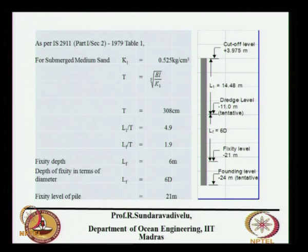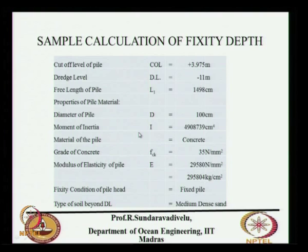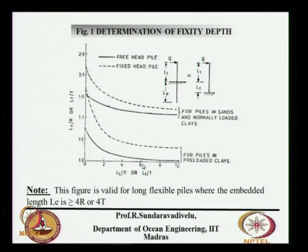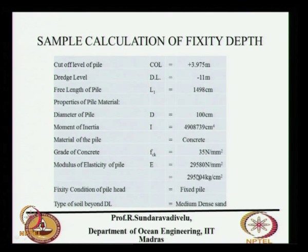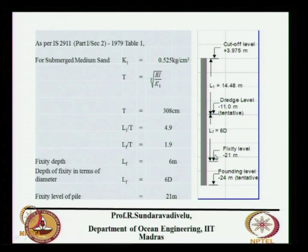For L1/T equal to 4.9, go to the chart. At 4.9 on the x-axis, go straight across for the fixated pile — LF/T is equal to approximately 1.93. Taking LF/T as 1.9, the fixity depth is about 6 meters. The fixity level will be minus 11 plus 6, which gives minus 17 meters — though this needs correction.